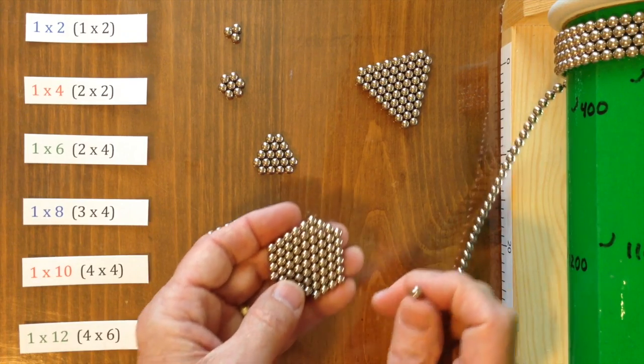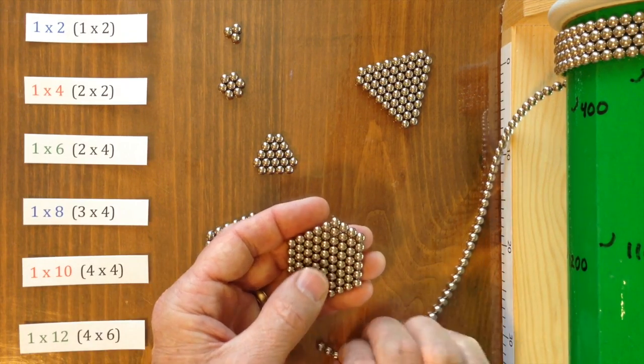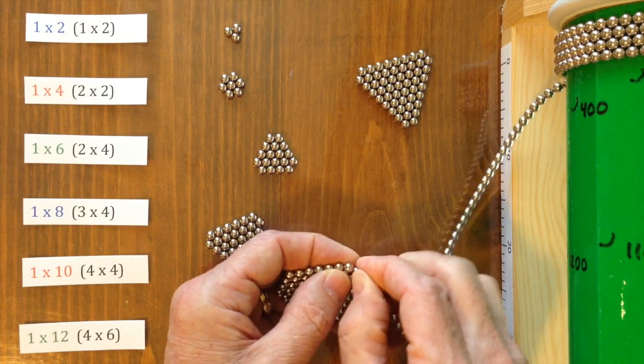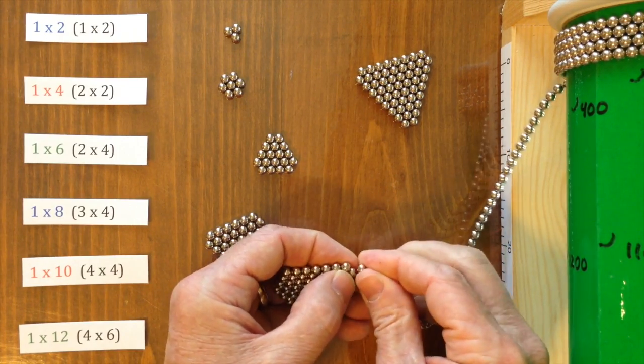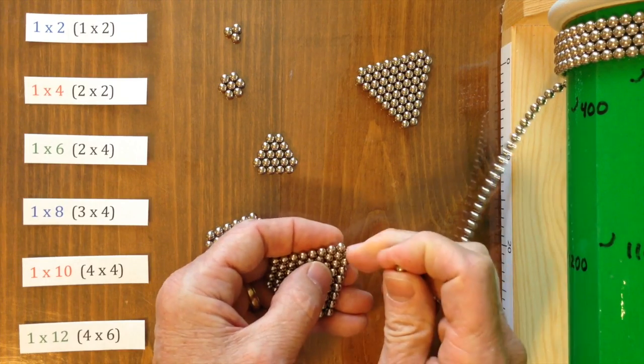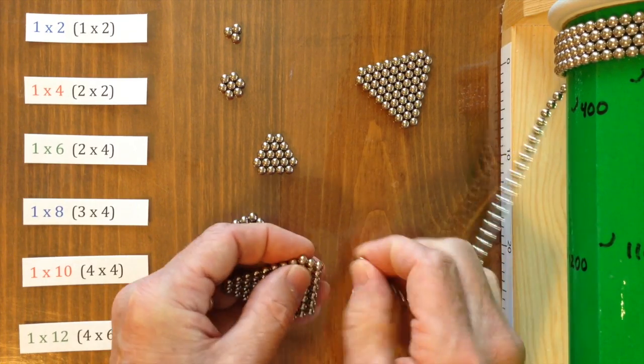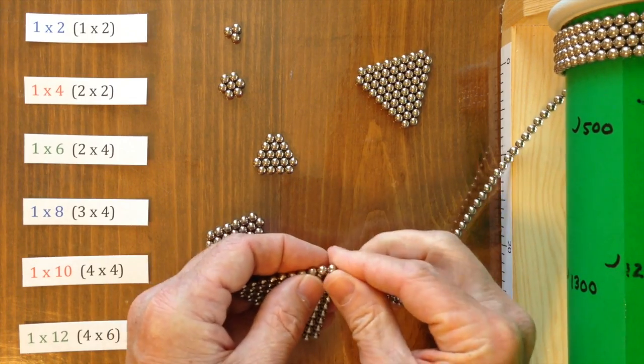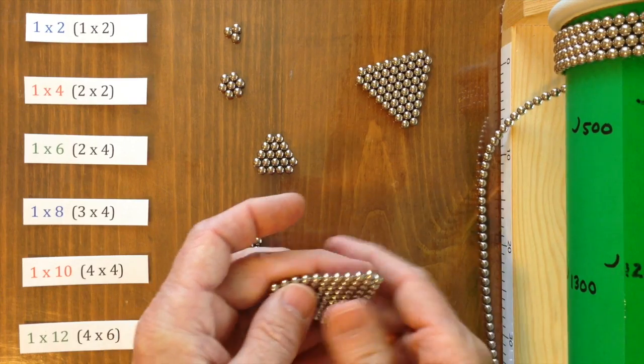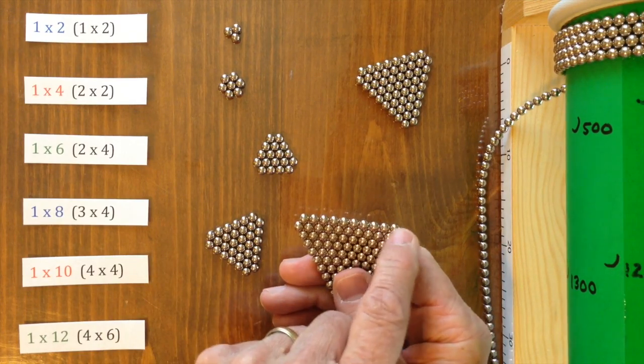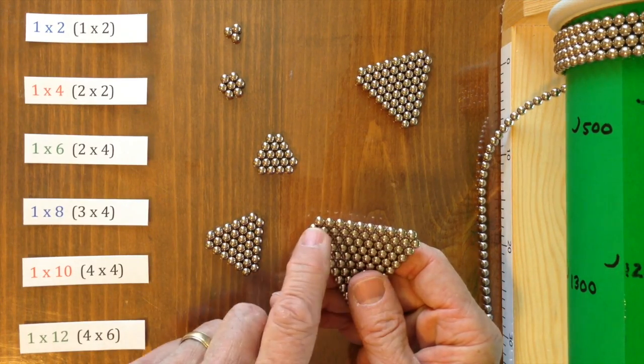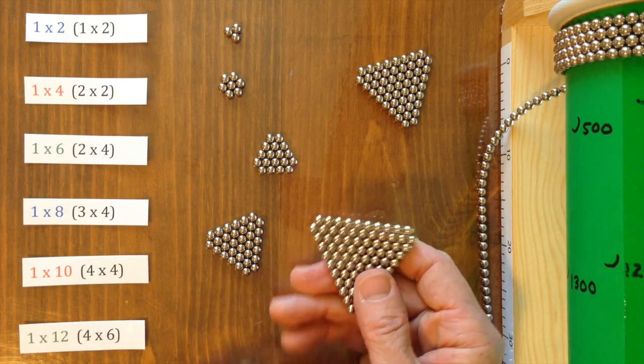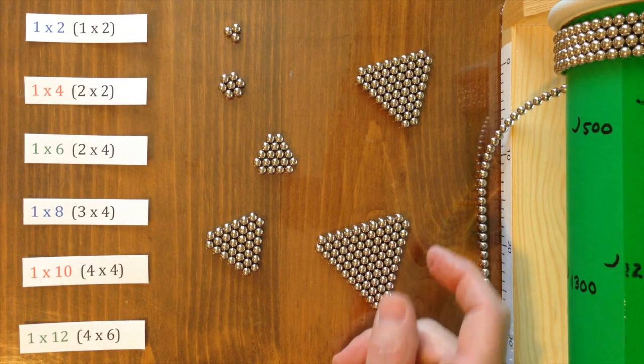Then to finish the 1 by 12, we're going to need to add chains to the end until we get down to a chain length of 2, leaving the last magnet for later. So now what we see here is a 2 by 10. And we'll add the magnets in the corners to make the 1 by 12.